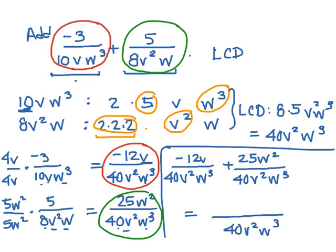Now that I have a common denominator, I can rewrite them with that one denominator: 40v squared w cubed, and I have, in the numerator, negative 12v plus 25w squared.